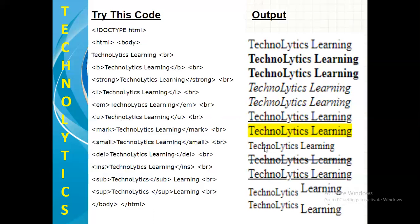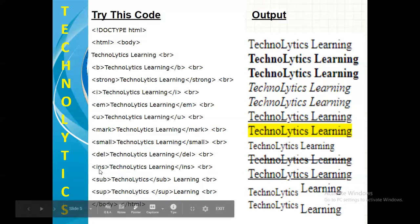Next is small for making the text size a little smaller. Next is del for strike through the text or cut the text. Next is insert for giving which will give you the same effect as underline.